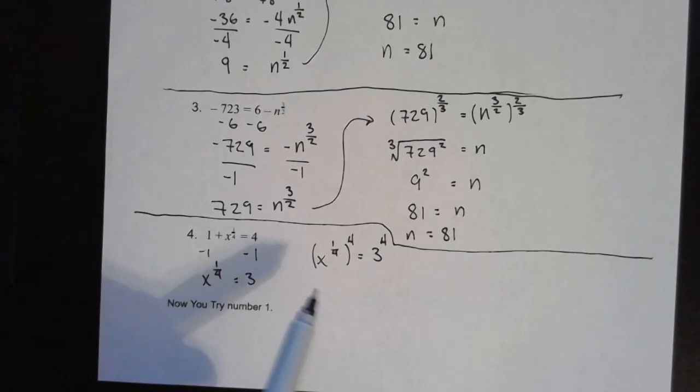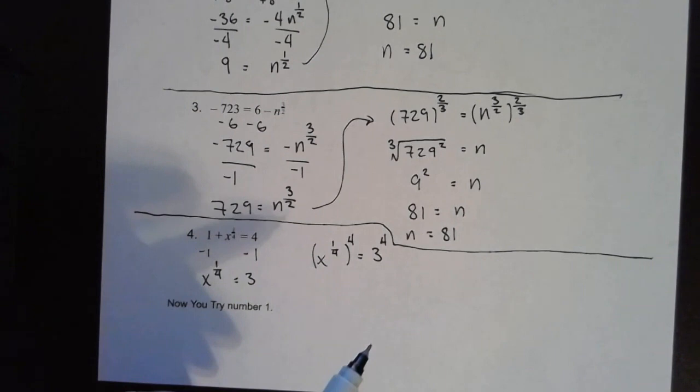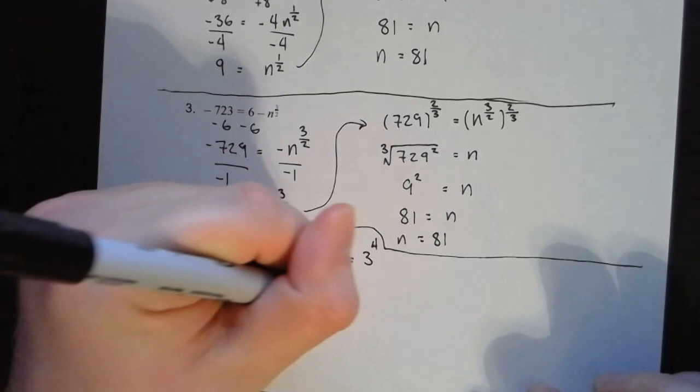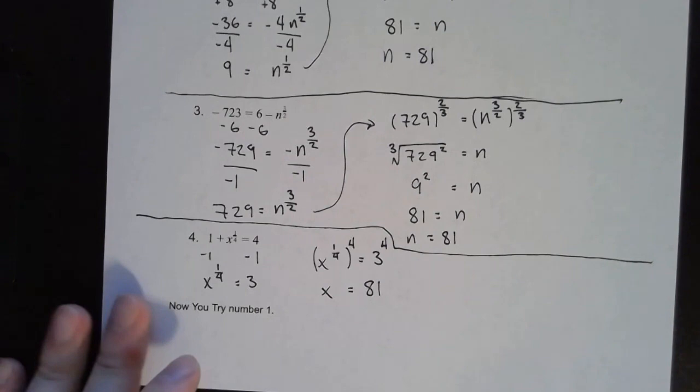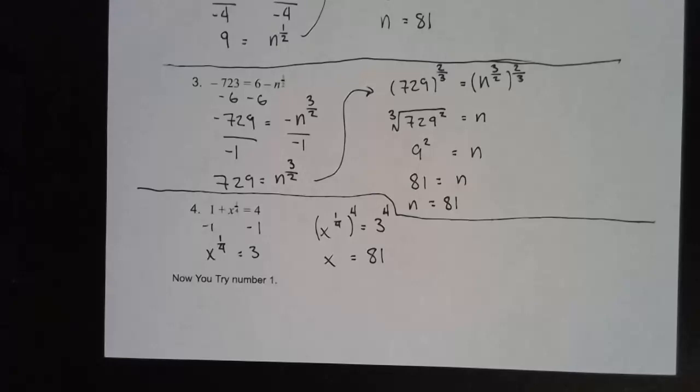No need to write anything in radical form here — we can just take 3 to the fourth power. So x equals 3 times 3 times 3 times 3, which is 81. So we ended up getting 81 for the last three answers, which is kind of interesting. Now we want to go ahead and try the u-tries.